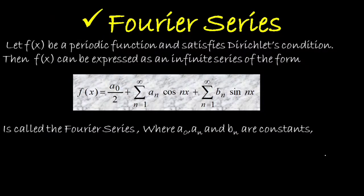Now let's move on to the definition of Fourier series. Let f(x) be a periodic function that satisfies the Dirichlet conditions. Then f(x) can be expressed as an infinite series: f(x) = a₀/2 + Σ aₙ cos(nx) + Σ bₙ sin(nx). This is called a Fourier series, and the constants a₀, aₙ, and bₙ are called the Fourier constants, which are found using Euler's formula.